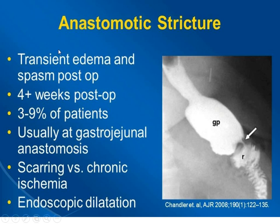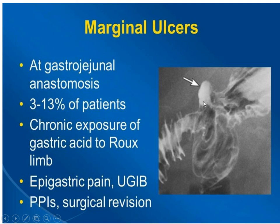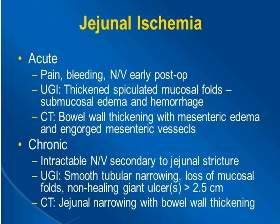Anastomotic stricture results from transient edema and spasm post-operatively, occurring in 3 to 9% of patients, usually four weeks after the operation, most commonly at the gastro-jejunal anastomosis. The small gastric pouch becomes dilated with reflux into the distal esophagus, and stricture at the gastro-jejunal anastomosis site is seen. The marginal ulcer is another complication also seen at the gastro-jejunal anastomosis site. These were discussed in detail last week, so we are moving through them quickly.